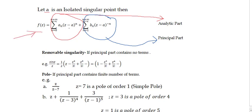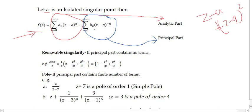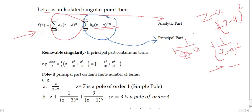Isolated singularity is further divided into types. If a is an isolated singular point, the function can be expanded in a Laurent series. The part with positive powers of (z minus a) — like (z-a), (z-a)², etc. — is the analytic part. The part with negative powers — like 1/(z-a), 1/(z-a)², etc. — is called the principal part, which is the non-analytic part. Based on the Laurent series expansion, we classify further singularities.